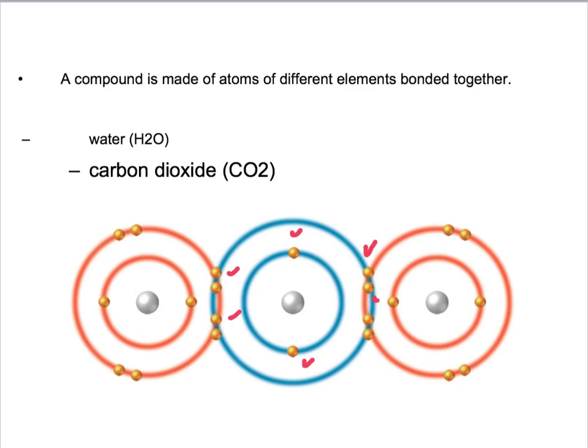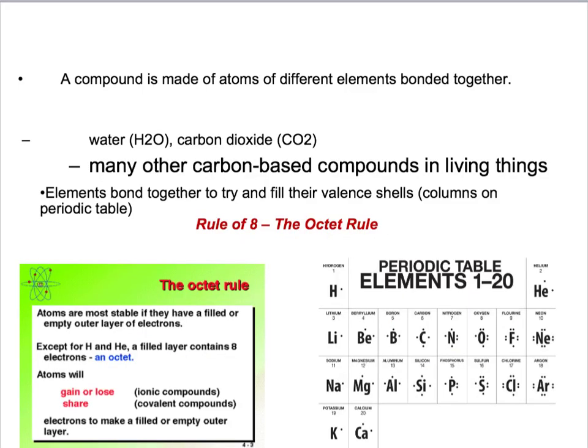Elements bond together typically because we talk about them wanting to have full valence shells, and that goes to the octet rule, the rule of eight. If you have a certain number of valence electrons, if you have seven for example you want to gain one to get to eight. If you are something like sodium and you only have one valence shell electron, you'll tend to lose that one to have a full valence shell below it.